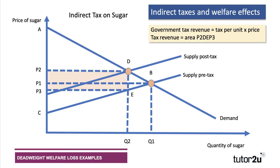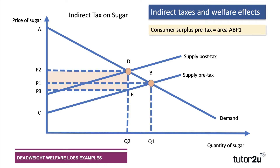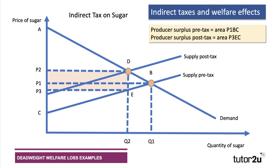A lot of what was consumer and producer surplus has gone to the government as tax revenue. Consumer surplus before was A B P1; now it's only A D P2, so there's been quite a big fall in consumer surplus because of the tax. Producer surplus before the tax was P1 B C; now it's only P3 E C, because they only keep the lower price P3. That shaded area — which was part of consumer and producer surplus — now goes to the government as tax revenue.